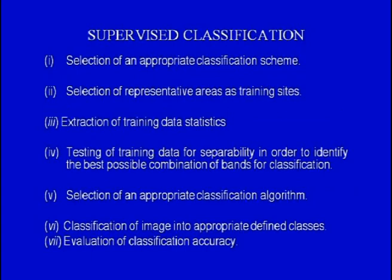First, selection of an appropriate classification scheme. Second, selection of representative areas as training sites. Third, extraction of training data statistics. Fourth, testing of training data for separability in order to identify the best possible combinations of bands for classification. Fifth, selection of an appropriate classification algorithm. Sixth, classification of the image into appropriately defined classes. And finally, evaluation of classification accuracy.